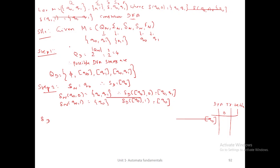The formula is: qd = 2^|qn|. Here qn contains 2 states, so 2^2 = 4. There are 4 possible states available. Therefore, the possible DFA states are qd = { φ, [q0], [q1], [q0,q1] }. Either we can get all 4 states or we may get only 1 or 2 from it. These are the possible states.